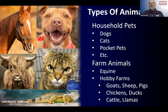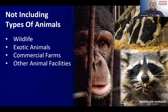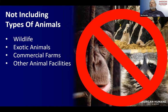Some small hobby farms may include cattle, llamas, ducks, and even some equine. We're going to be excluding wildlife, exotic animals, commercial farms, or other different types of animal facilities.